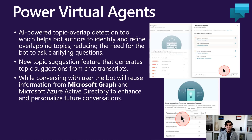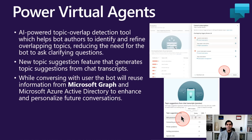In Power Virtual Agents, the low-code chatbot experience in the Power Platform, the announcements were around artificial intelligence being plugged in. There will be a new AI-powered topic overlap detection tool, which will help bot authors identify and refine overlapping topics, reducing the need for the bot to ask clarifying questions. At the same time, a new topic suggestion feature powered by AI will generate topic suggestions based on chat transcripts — very powerful.